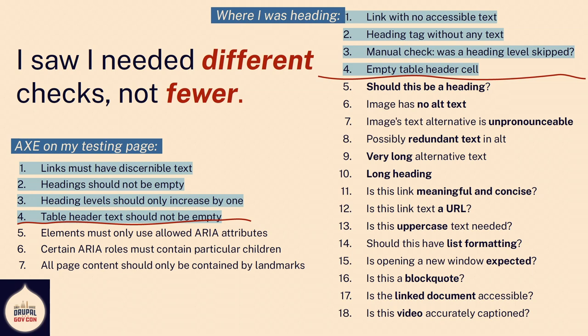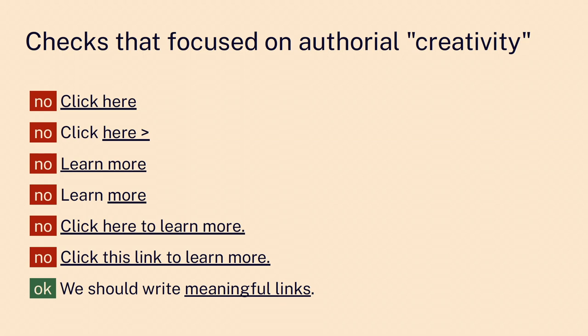It wasn't just that I wanted to knock out the developer tests — I wanted a whole different test suite. And I knew it had to be creative. I wanted to start flagging 'click here' links. But you can't just make a list of bad links, because once you start studying this, you find you have to account for 'click here,' 'here,' 'learn more,' 'more,' 'click here to learn more,' 'click this link to learn more,' and so on — you've got a polymorphic problem. Someone had to spend time figuring out how to write these tests.